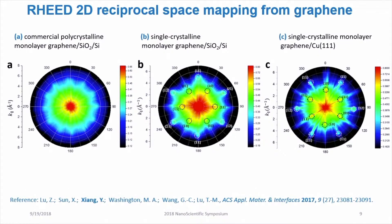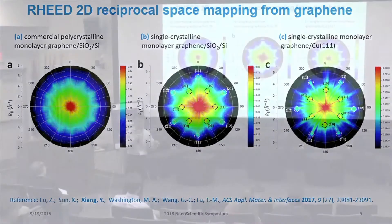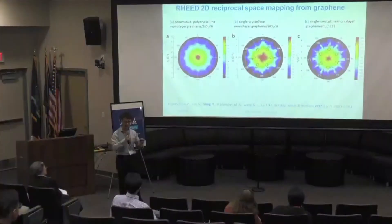The mapping is constructed by taking 100 RHEED patterns at different azimuthal angles and putting them together. What this reciprocal space mapping shows is the symmetry of the material.